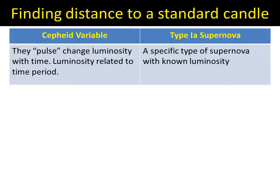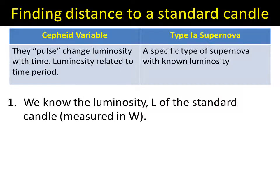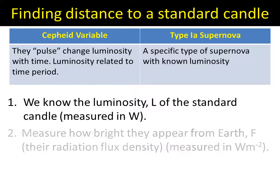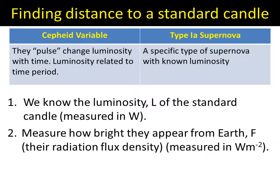How do we use them? Well, the thing we know about them is their luminosity — their brightness, the amount of energy they throw out, measured in watts. If we know their brightness at the source, we can measure how bright they appear from Earth, which used to be known as the intensity and is now known as the radiation flux density.